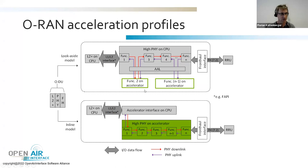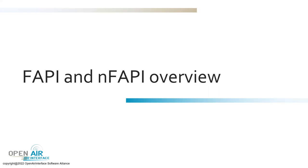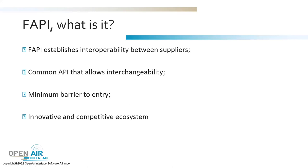With that, I hand over to Ruben. Thank you, Florian. I will now talk about FAPI and NFAPI as defined by the Small Cell Forum, and more closely on the FAPI interface used to connect Open Air Interface Layer 2 with the NVIDIA Aerial Layer 1. The FAPI interface establishes interoperability between suppliers of hardware or software solutions by providing a common API that permits interchangeability of system parts, allowing an easy way for new vendors to enter the market and enabling a competitive, innovative ecosystem for 5G small cell vendors.